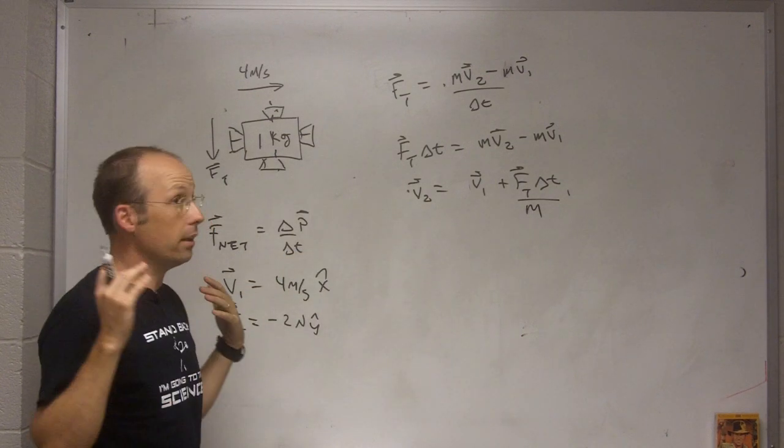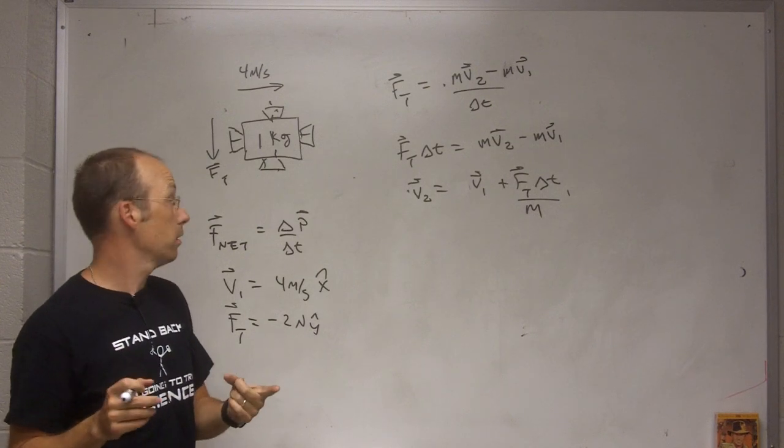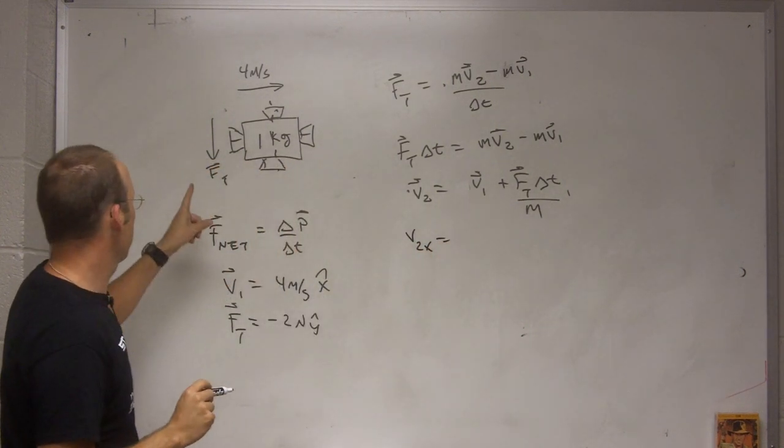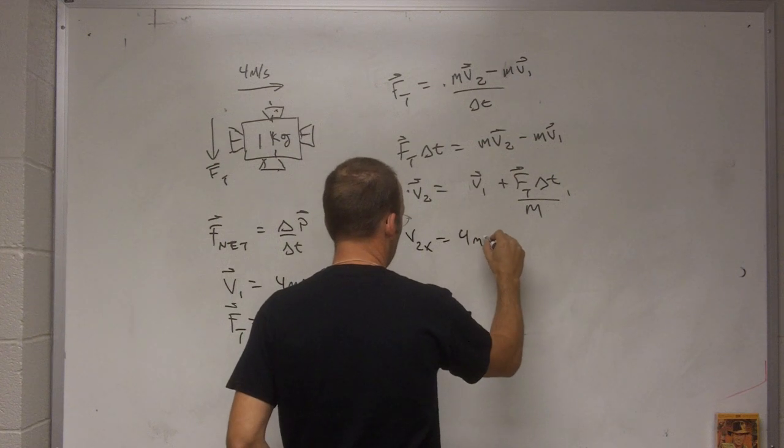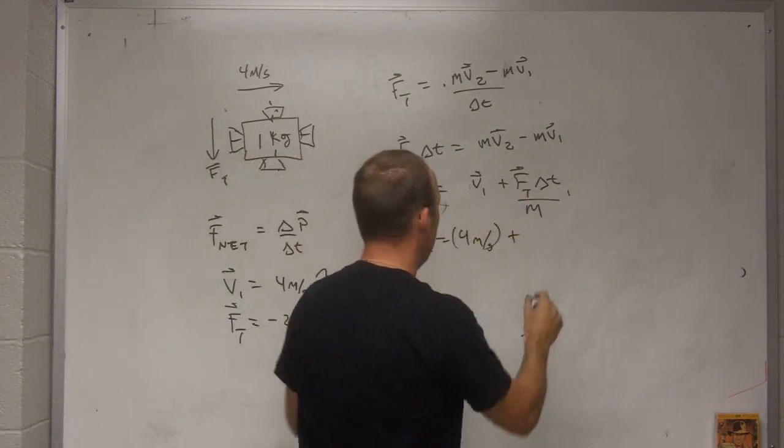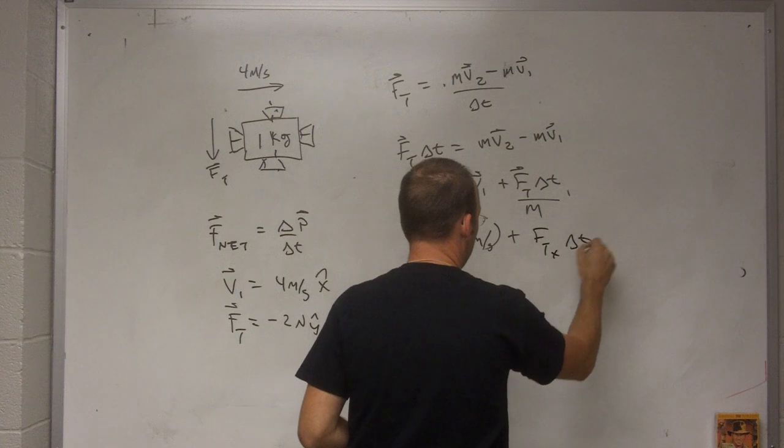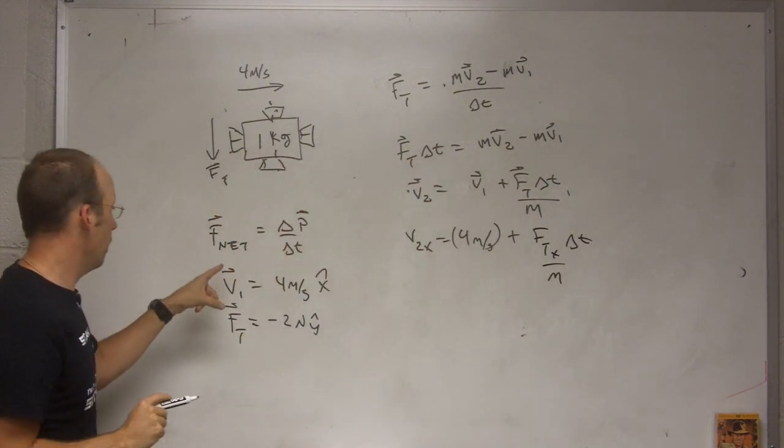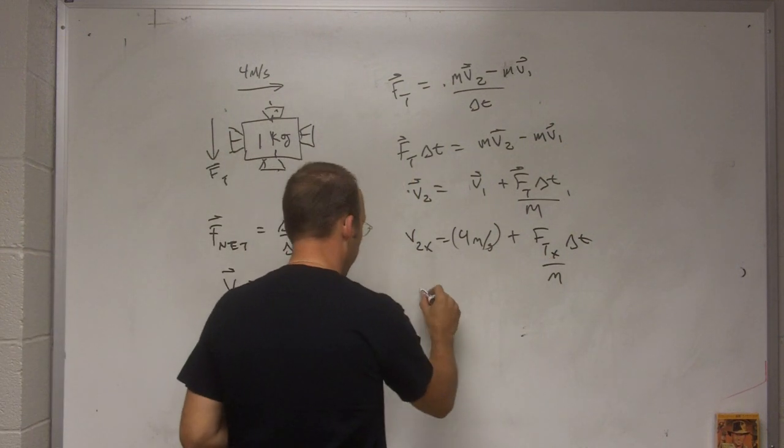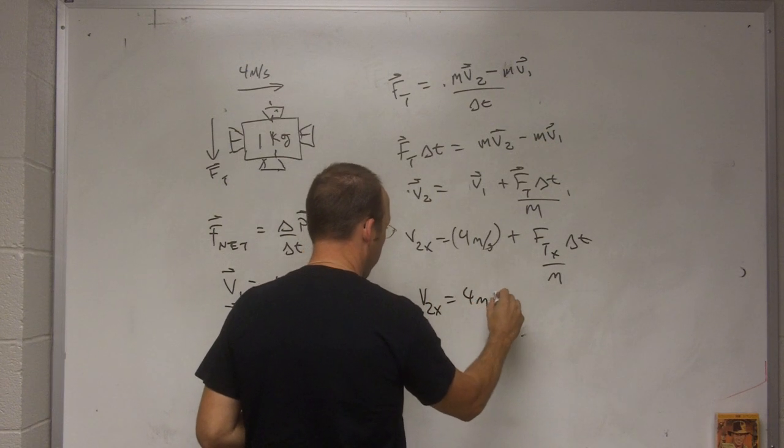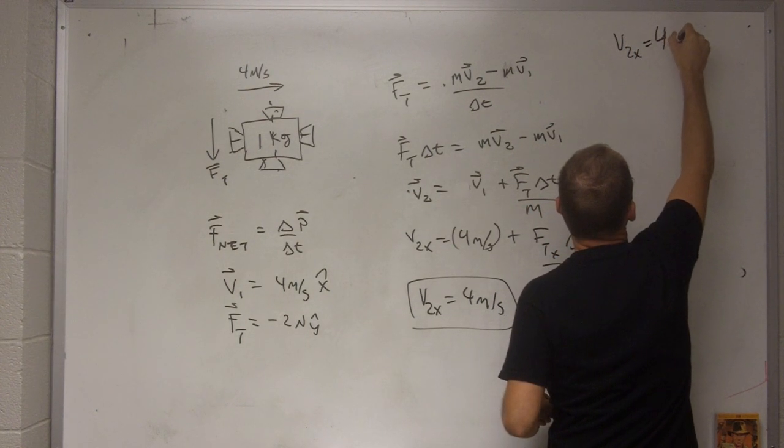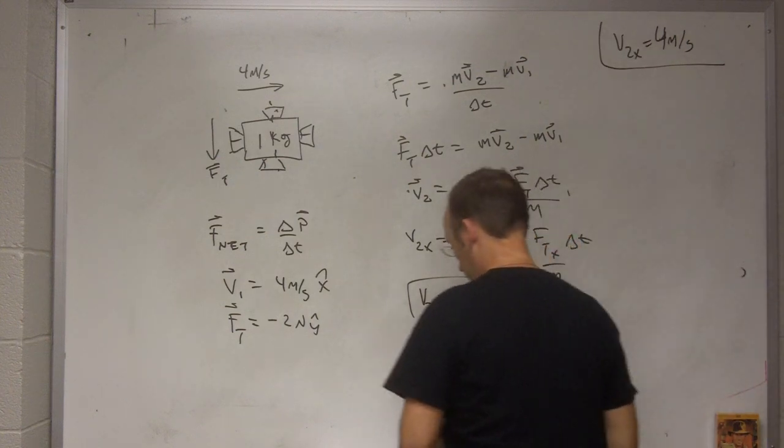Okay, now it's not a one dimensional problem. So I'll do the x and then I'll do the y. So let's say v2x equals v1x, which is 4 meters per second. Plus Ft x delta t over m. But what's my x component of the thrust? Zero. So this whole term is zero. So v2x is 4 meters per second. Let me put that up here because we'll need it.